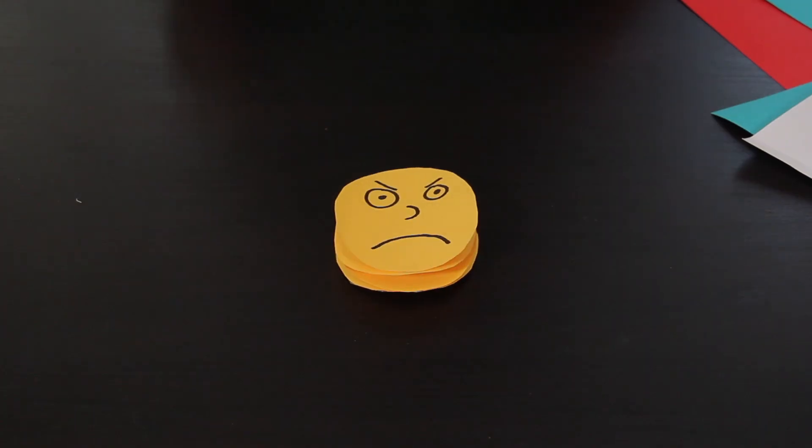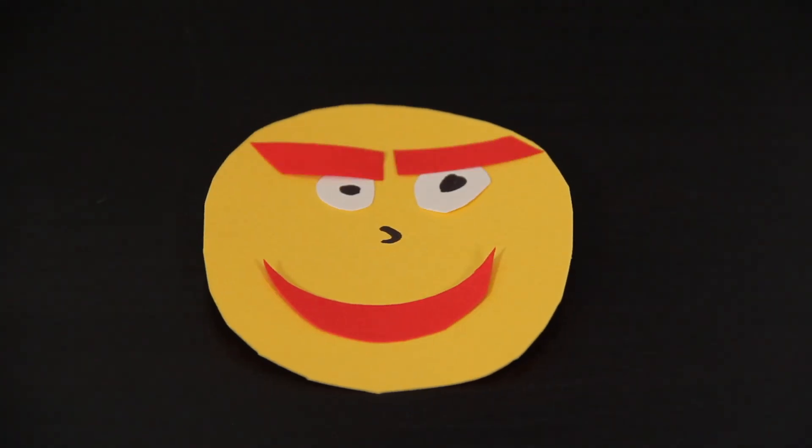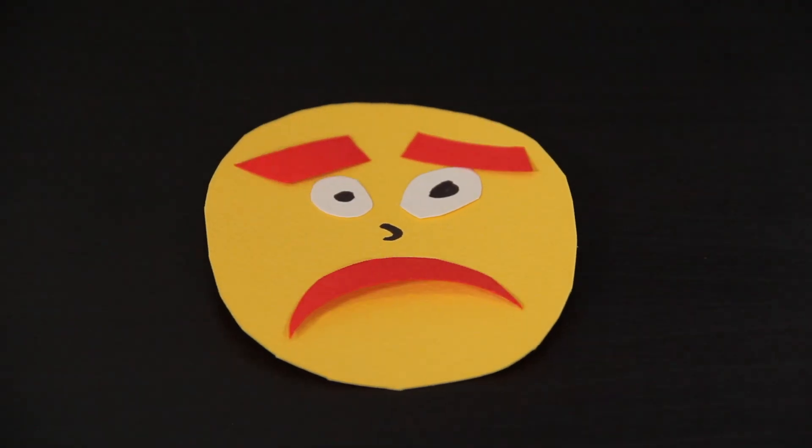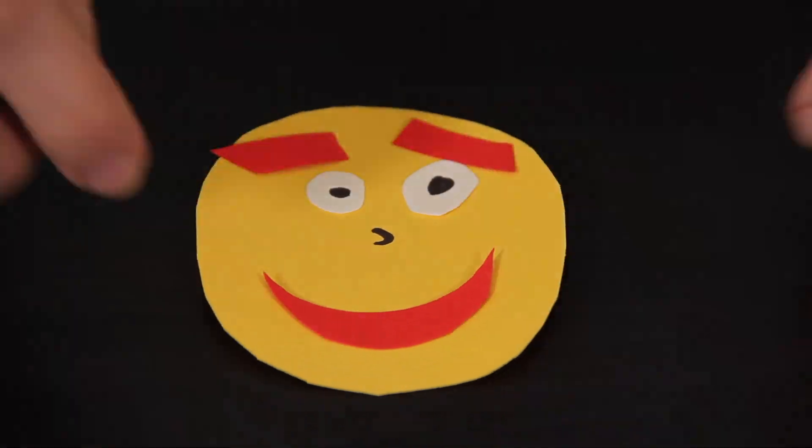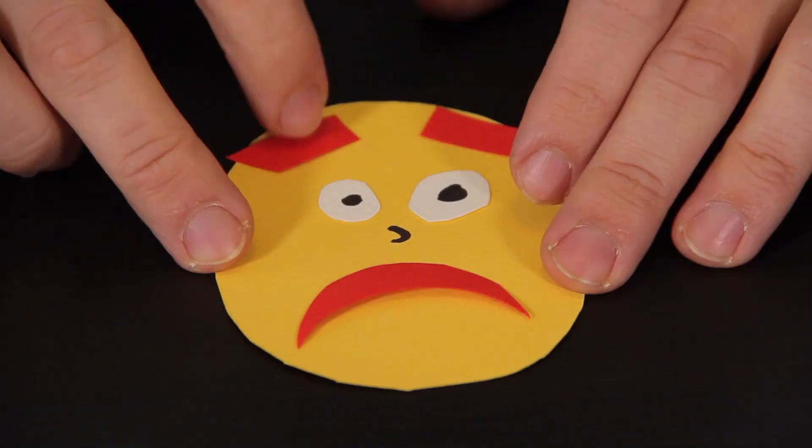If you have a face moving through a series of expressions, you can accomplish this two ways. One way is to make the places on the head separate from the head itself. On this head, the eyebrows and mouth are different objects, and when I want to animate it from happy to sad, I move each of the pieces separately, frame by frame, giving me a lot of flexibility.